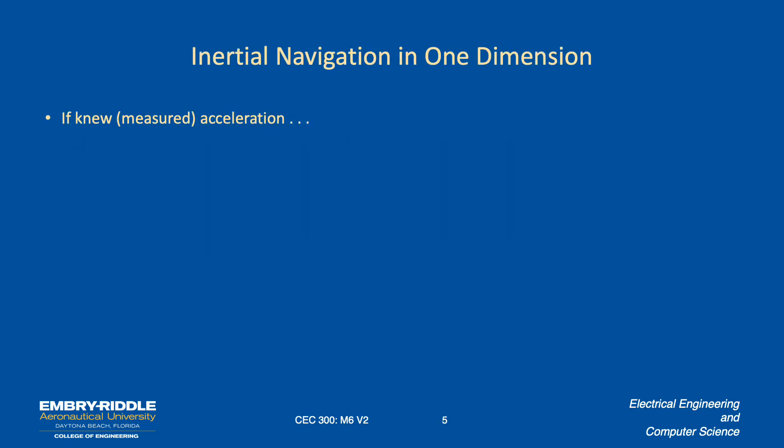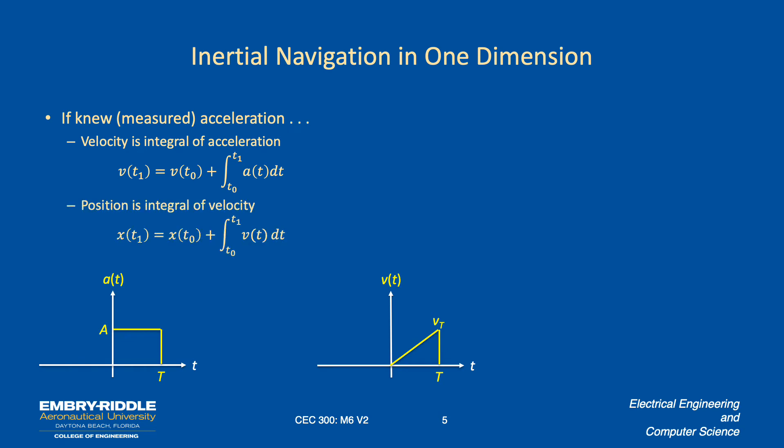So if we knew or measured the acceleration, we can find the velocity by integrating the acceleration. And now that we know or believe we know the velocity, we can integrate that to get the position.